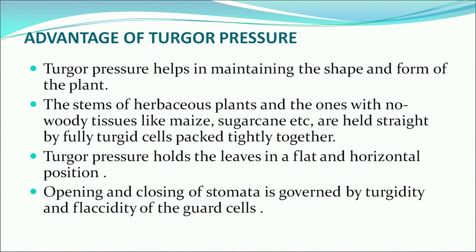Turgor pressure is the result of endosmosis and it allows the plant cell to stretch but does not allow the cell to burst. Turgor pressure helps in maintaining the shape and form of the plant. The stems of herbaceous plants and organs with no woody tissues — like maize, sugarcane, etc. — are held straight by fully turgid cells packed tightly together. Turgor pressure holds the leaves in a flat and horizontal position, and the opening and closing of stomata is governed by the turgidity and flaccidity of the guard cells. Water is available in the soil in three forms.